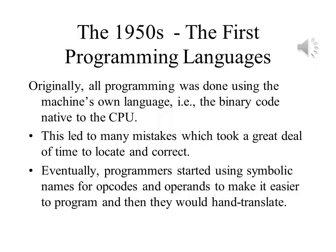Base 8, or octal numbers, can be converted to and from binary, or base 2 numbers, more quickly than converting binary to or from base 10, or the decimal numbers that we use. Later, programmers developed symbolic names for the operation codes, or opcodes, and the operands of the instructions.